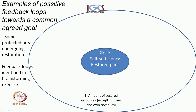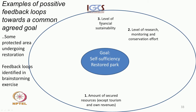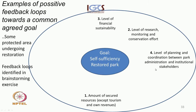The first item, considered the most important, was the amount of secured resources — excluding resources obtained from revenue generation. The second was the level of research, monitoring, and conservation efforts. The third was the level of financial sustainability. The fourth was the level of planning and coordination between the park itself and the institutional stakeholders and stakeholders of the region.